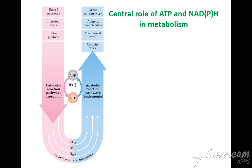Regarding the role of ATP and ADP in metabolism: stored nutrients, ingested food, and solar photons undergo catabolism reactions. These are exergonic, meaning energy or heat is released to the environment, and simple products and precursors — CO₂, NH₃, H₂O — are produced.